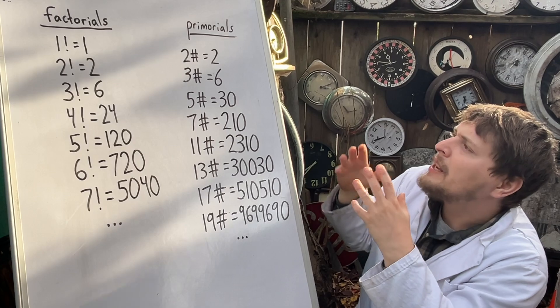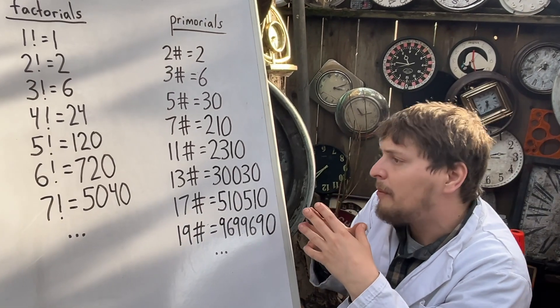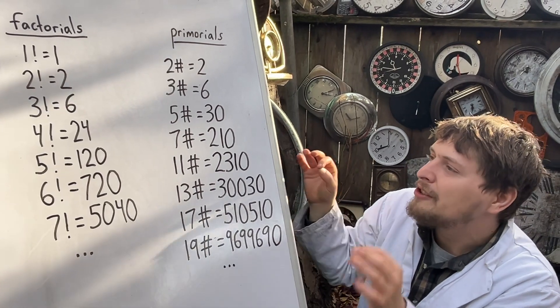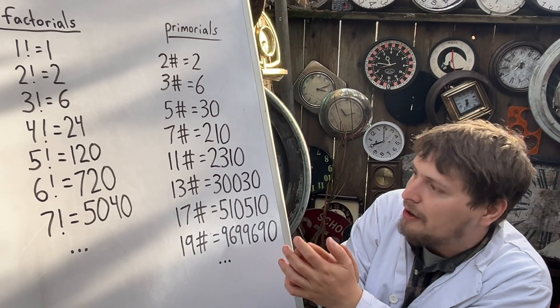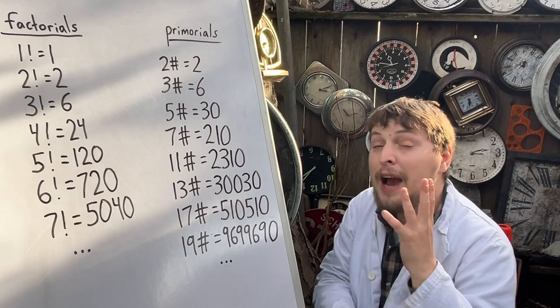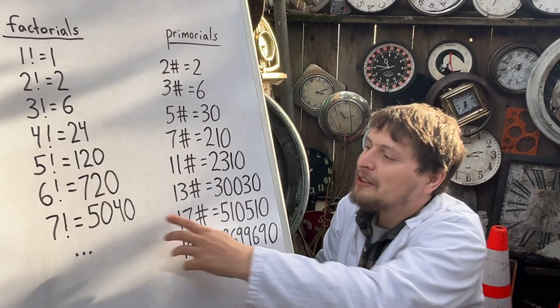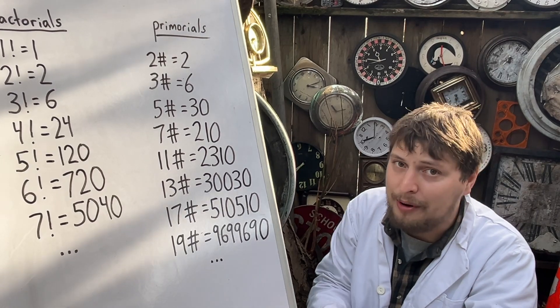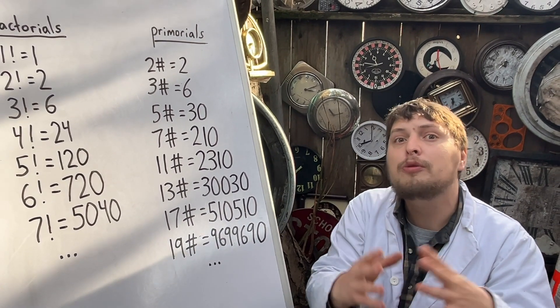And if we look at these two types of numbers, while they have many similarities, they also have an interesting difference that occurred to me the other day. With factorials, if we look at the end of larger and larger factorials, they will begin to accumulate zeros.